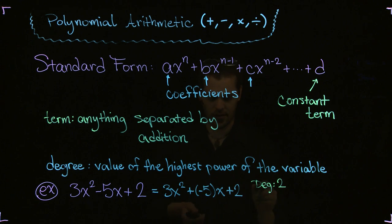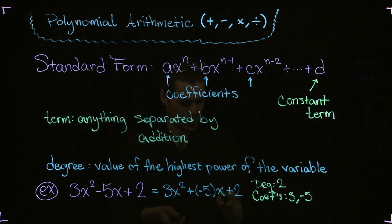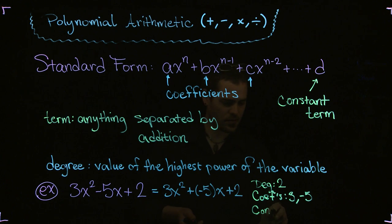The coefficients—I'll just put them in a list—3, -5... oh excuse me, there are only two coefficients: 3 and -5. The 2 we're going to call the constant term.